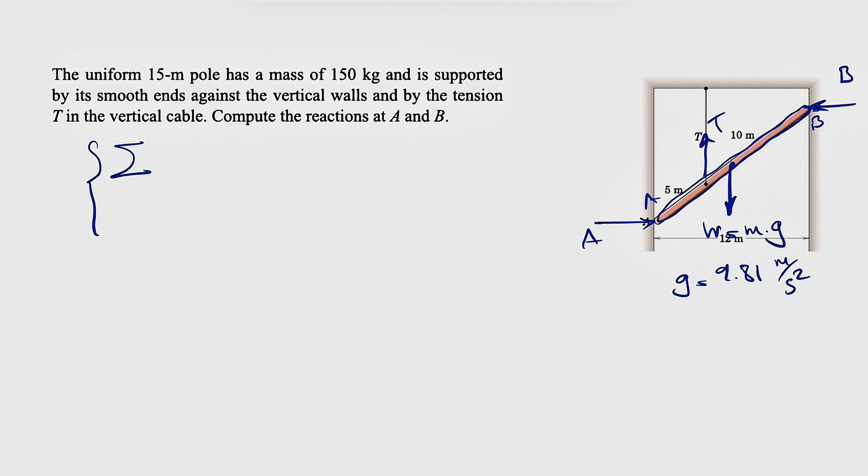So we are in equilibrium. We have two equations: sum of all forces in X equals zero, sum of all forces in Y equals zero. Our last equation would be our moment equation about any points that we have. If we look at this, we'll see that we have three unknowns, A, B, and T, and three equations. So we should be able to find all of them.